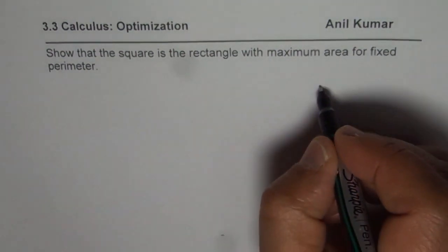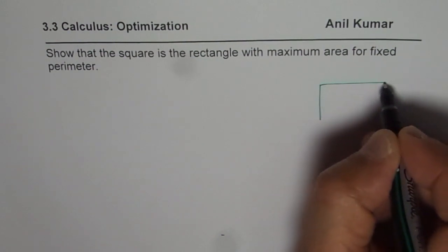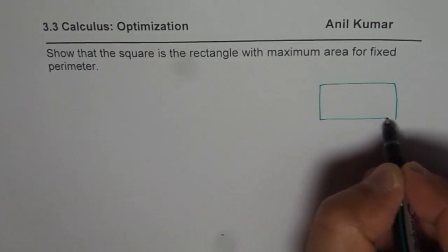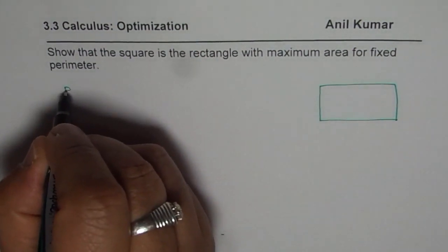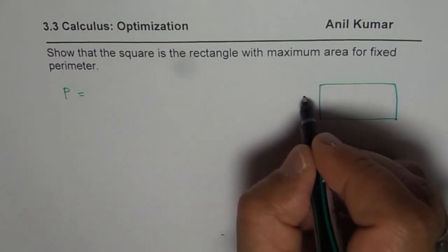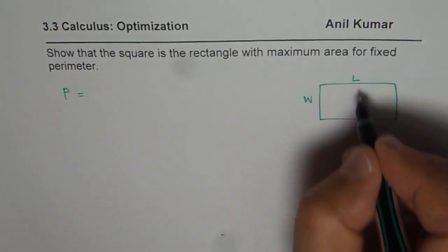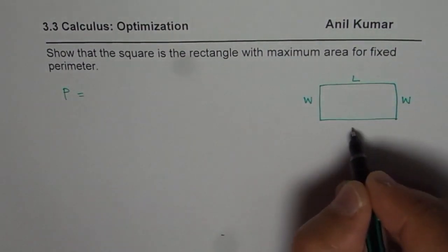We will come across many questions where we are given the perimeter. We say perimeter is fixed, so we say P is fixed. Perimeter is what? It is the sum of length and width of a rectangle.